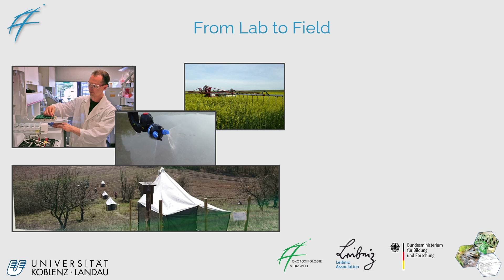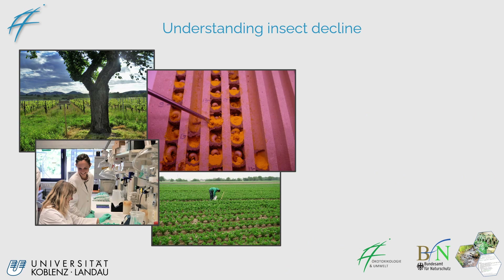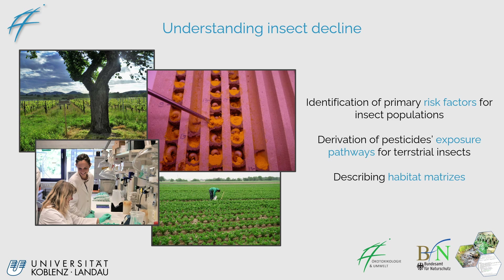To give you some ideas, here is a from-lab-to-field study. The goal of this study is to better understand how land use or various land use changes can affect biodiversity here in Germany. It also looks more closely at the identification of insect diversity in and around nature conservation areas, and seeks to understand how insect decline has progressed by quantifying risk factors for insect pollinators as well as the exposure pathways these communities are exposed to.